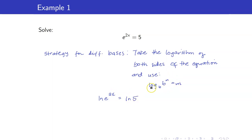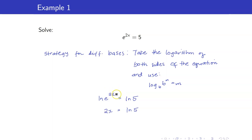By this property, ln of e to the 2x — remember this is log base e — this gets cancelled and your variable will now come down. You have 2x equals ln of 5. Recall that whenever we have exponential equations, your goal is to bring down your variable, so therefore x is equal to ln of 5 all over 2.